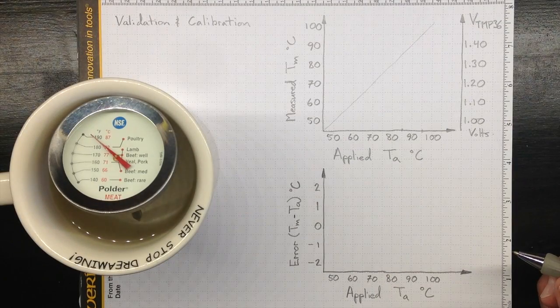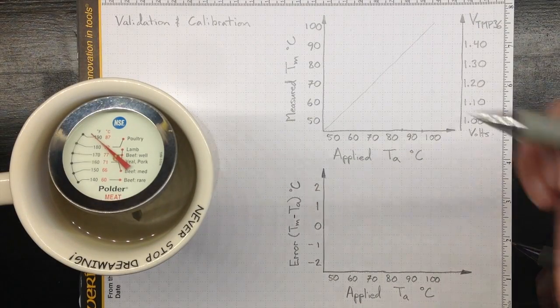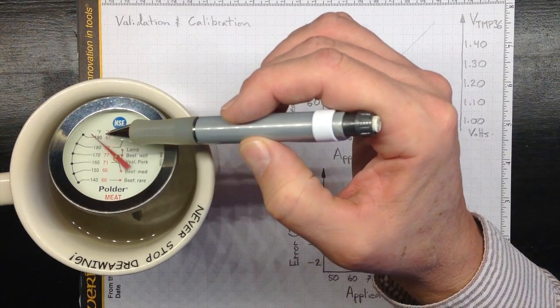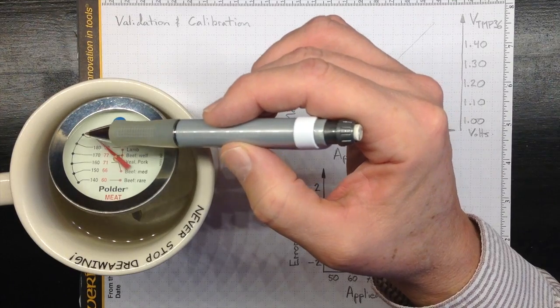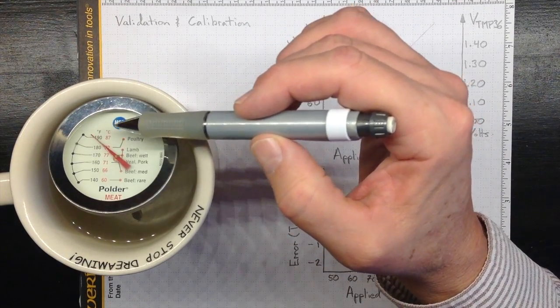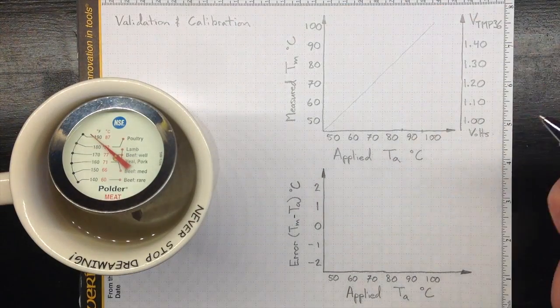Still moving, but pretty slowly. That looks like about half a division above the 190F mark. So that would be about 195F, or about 90 degrees Celsius. So that's a pretty believable number.